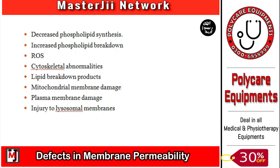Next, we have lipid breakdown products. These products include free fatty acids, acylcarnitine, and lysophospholipids. When all the phospholipids are degraded, these products will accumulate in the cell. When these products accumulate, they have a detergent effect on the membrane.